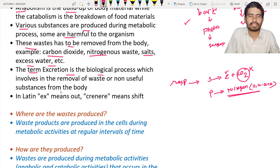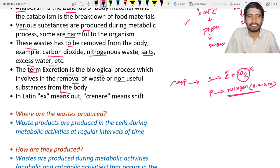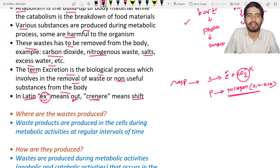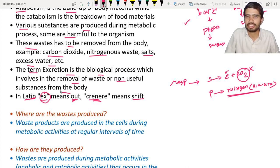Excretion is a biological process occurring in the body which involves the removal of waste and non-useful substances. The term comes from the Latin word 'excreinary,' which is a combination of two words: 'ex' meaning 'out' and 'creinary' meaning 'shift.' So excretion means shifting waste materials out from the body.